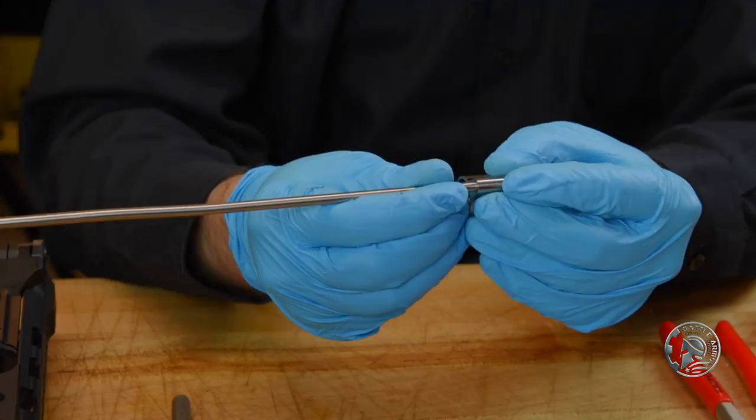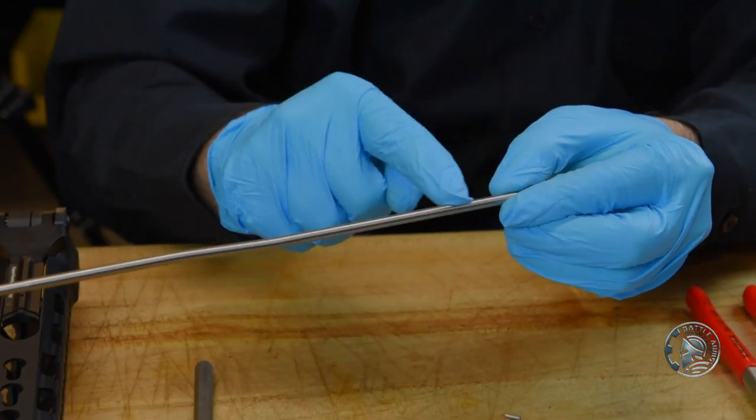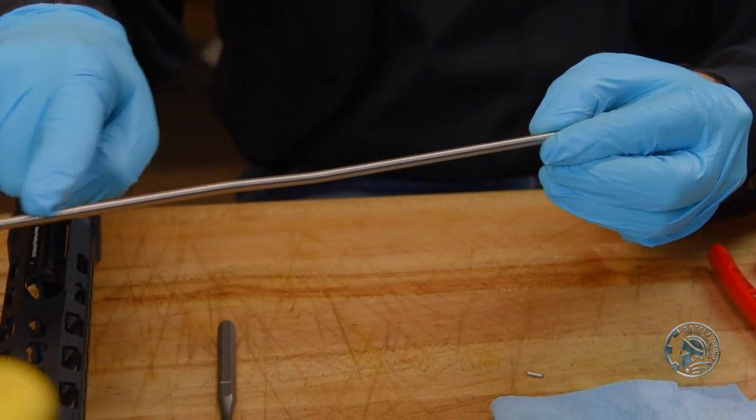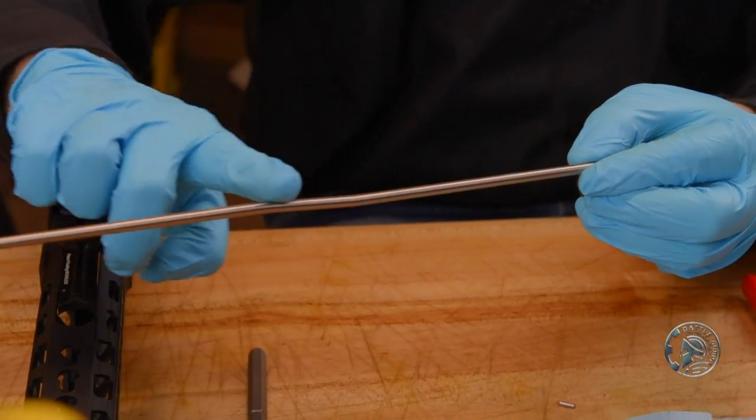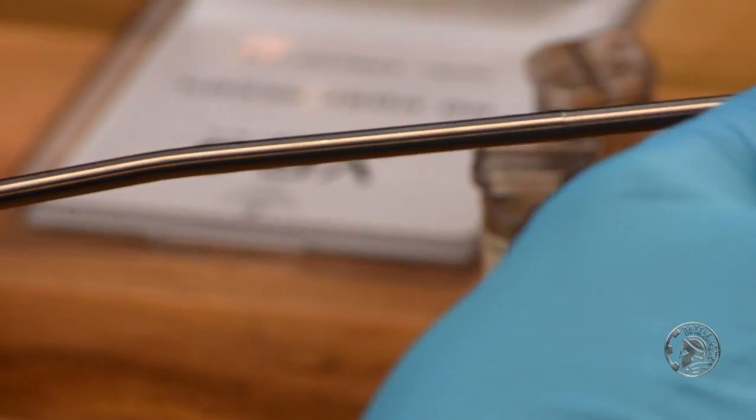Once we have the gas tube installed, all gas tubes are going to have a slight bend so that the tube can raise to go through the relief cut in the upper receiver. We always want the bend to be pointed upwards, with the low end towards the gas block and the high end pointed towards the upper.